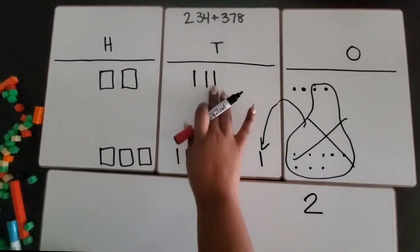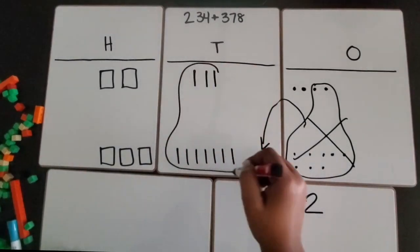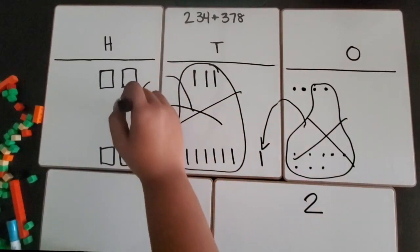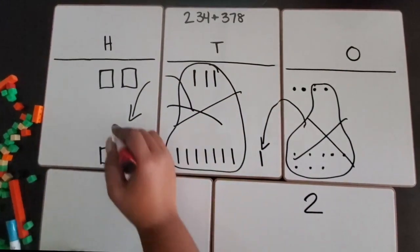Once I make a ten, I can regroup them for a hundred, because ten tens makes a hundred. I still have one ten remaining.